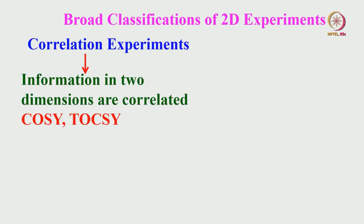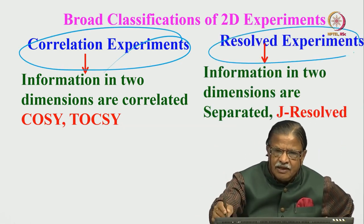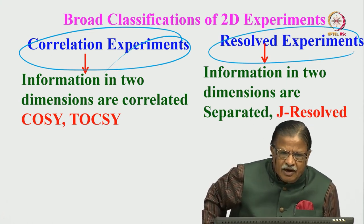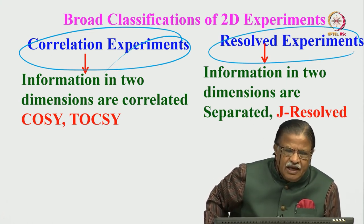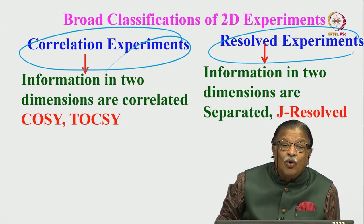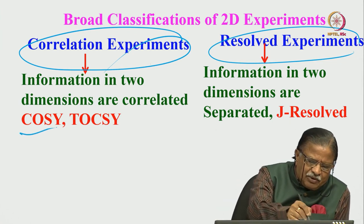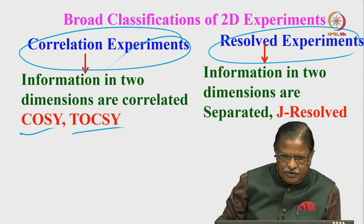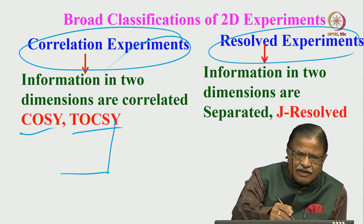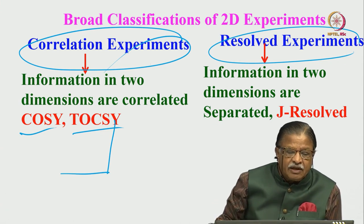For the broad classification of 2D experiments, there are two ways of classifying them. One I call correlation experiments, and the other is resolved-type experiments. In correlation experiments, the information in two dimensions is correlated — two pieces of information are related. Examples are COSY, TOCSY, etc. For example, the chemical shift here and the chemical shift of another nucleus may be related — we can correlate them.